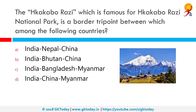The Hkakabo Razi, which is famous for the Hkakabo Razi National Park, is a border tri-point between which countries? Hkakabo Razi is believed to be Myanmar's highest mountain at 5,881 meters and probably the highest in Southeast Asia. It is located in the northern Myanmar state of Kachin, in a sub-range of the greater Himalayan mountain system, near the border tri-point of India, China, and Myanmar.